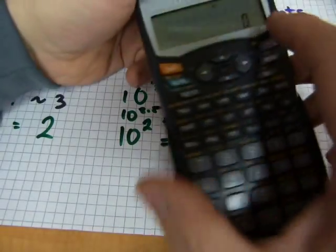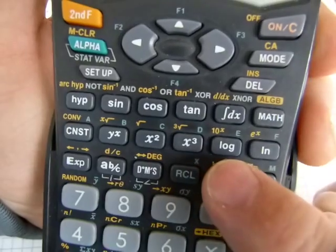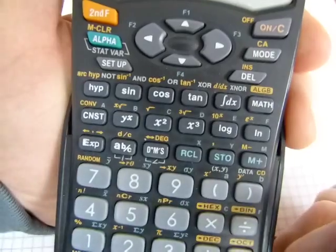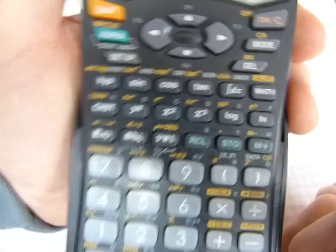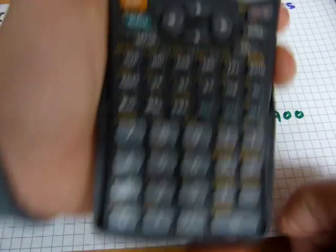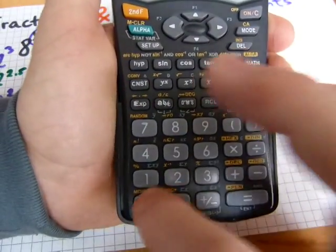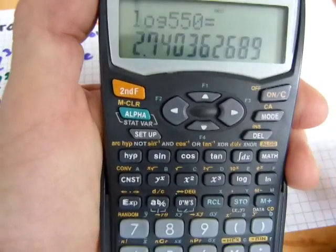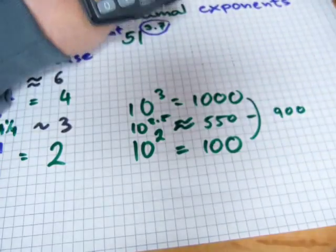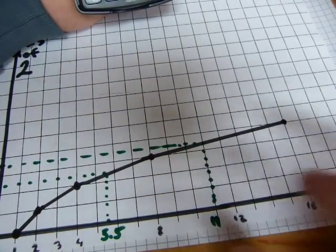But, on a calculator here, you've got a secret button here that says log on it. That doesn't relate to timber, or lumber, or falling trees. What you do is, let's enter 550, let's enter log 550 equals. To get to 550, it's 10 to the power of 2.7.